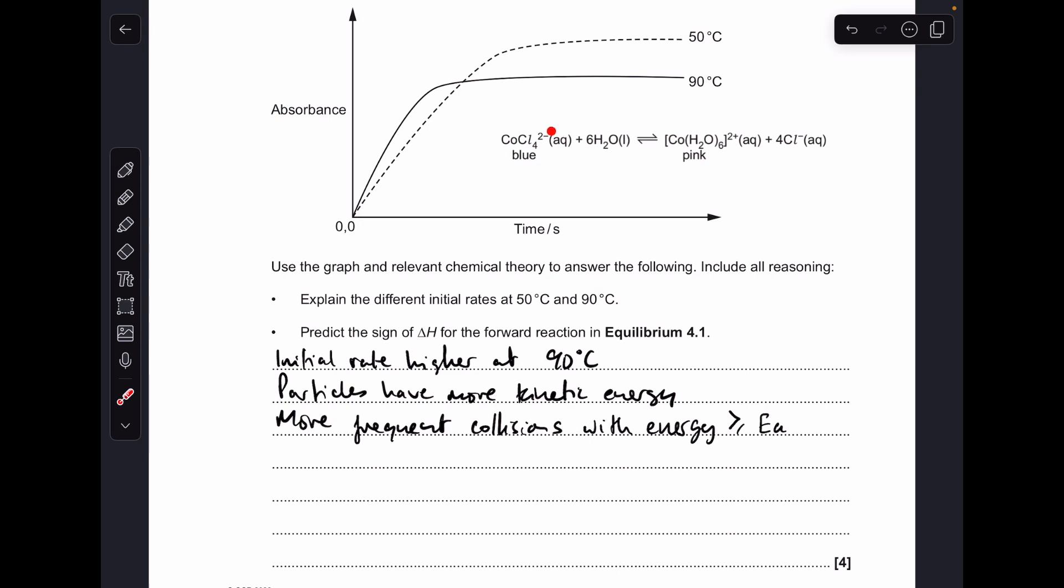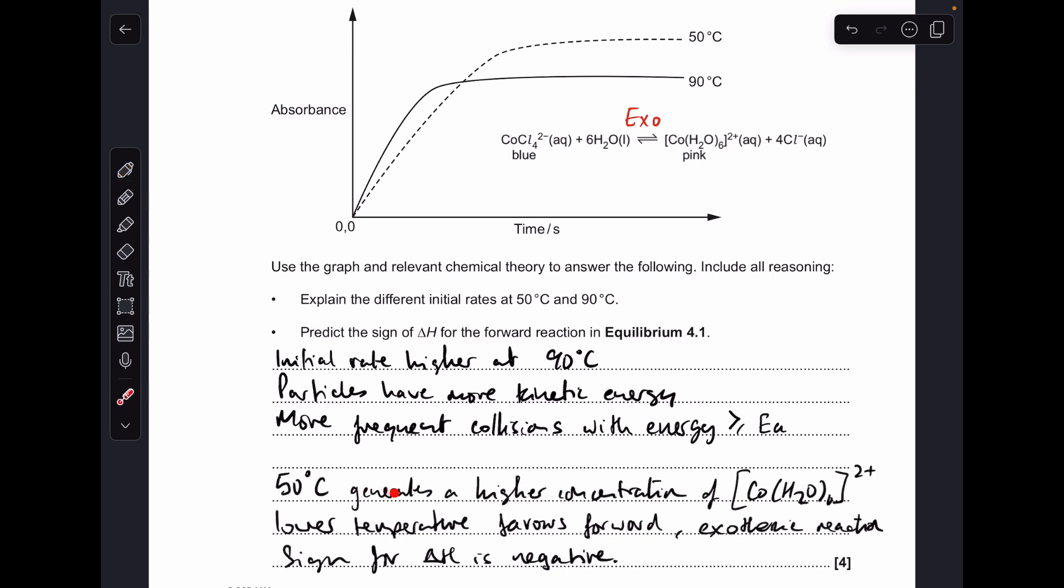So what does that mean? The lower temperature must be favouring this forward reaction, so that means the forward reaction must be exothermic. Low temperatures always favour the exothermic reaction, and obviously that's got a negative delta H sign. So something like this is fine: 50°C generates a higher concentration of the cobalt hexa aqua 2+ species. Low temperature therefore favours the forward exothermic reaction, so the sign for the delta H is negative.